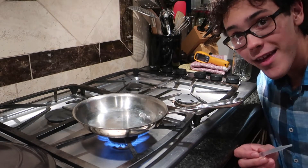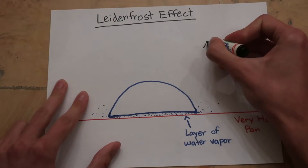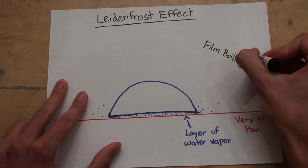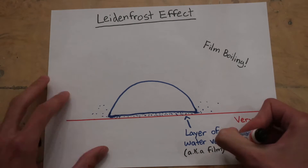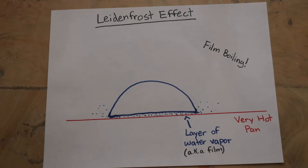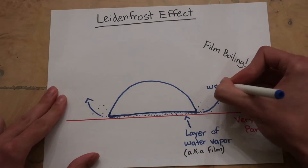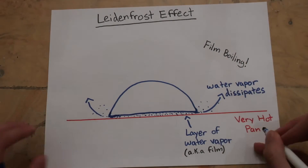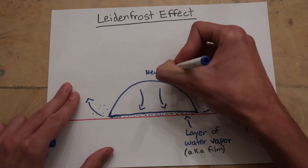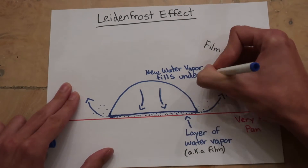This is a process known as film boiling. A thin film — in this case water vapor — cushions the water from boiling all at once. This way, the heat has to go through that layer of vapor before it reaches the water, and the water slowly and continuously boils off to fill that vapor cushion underneath.